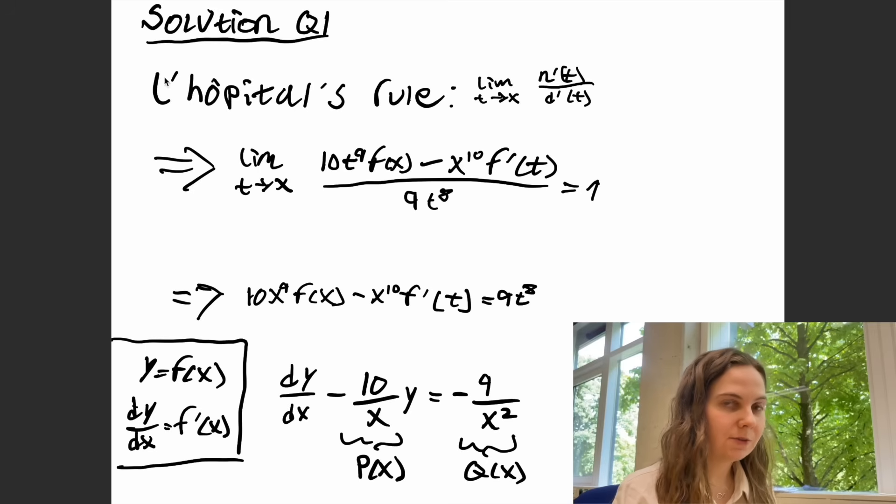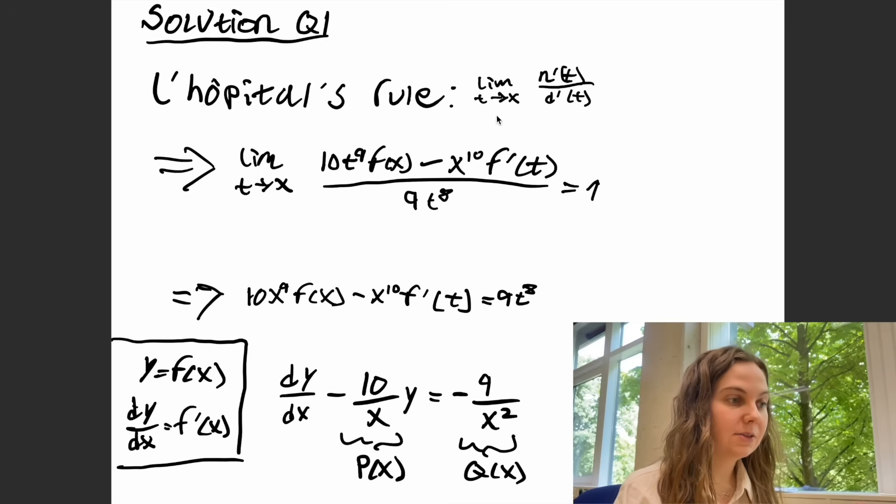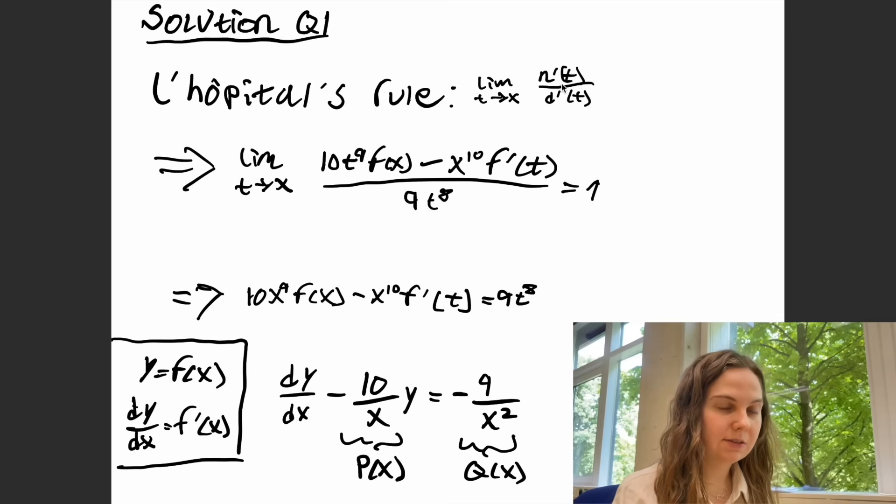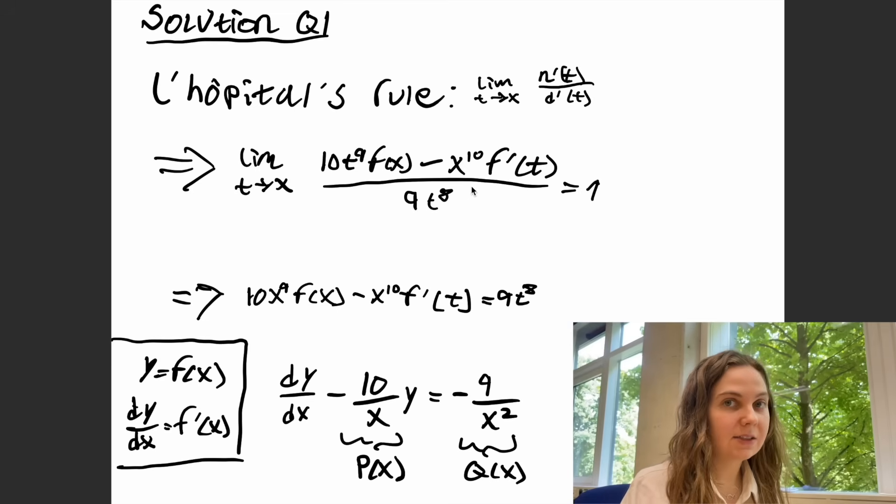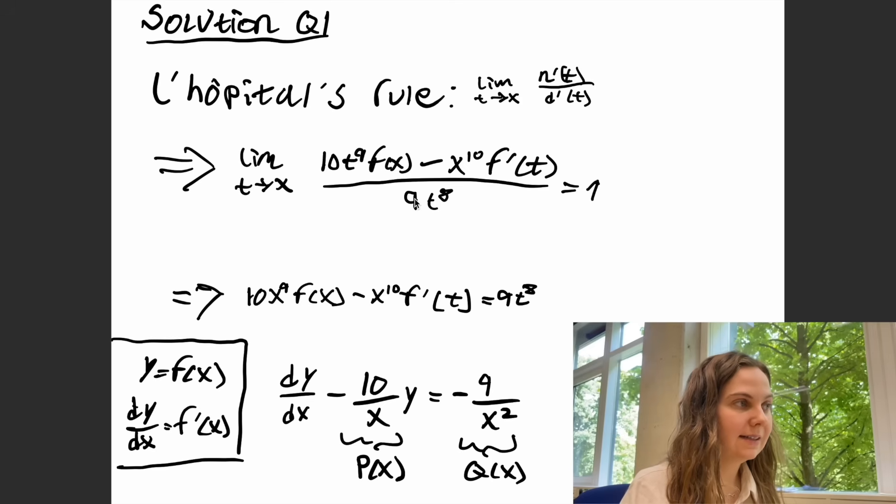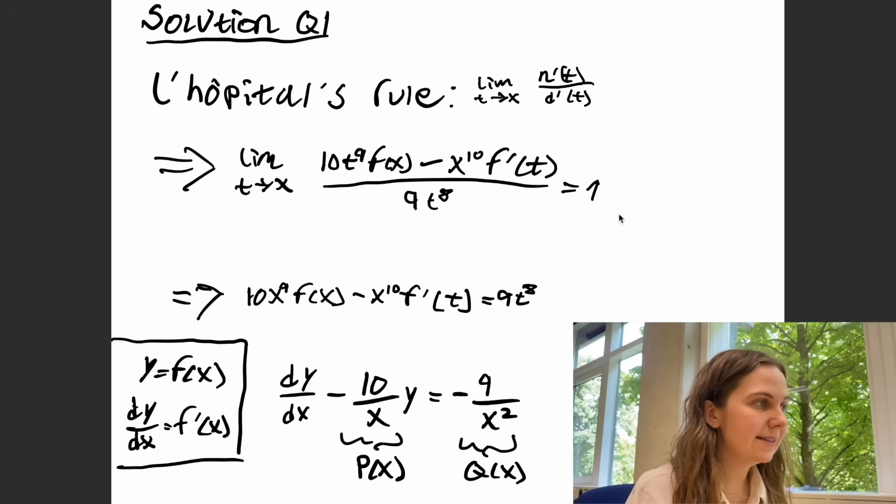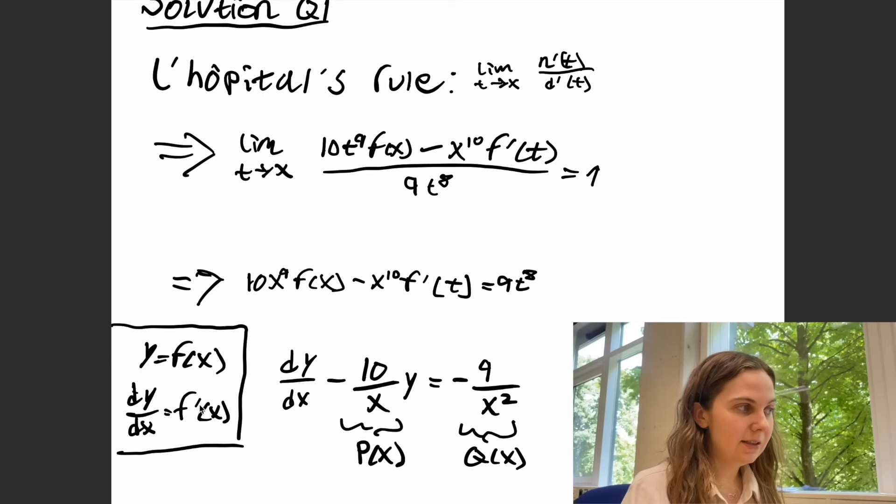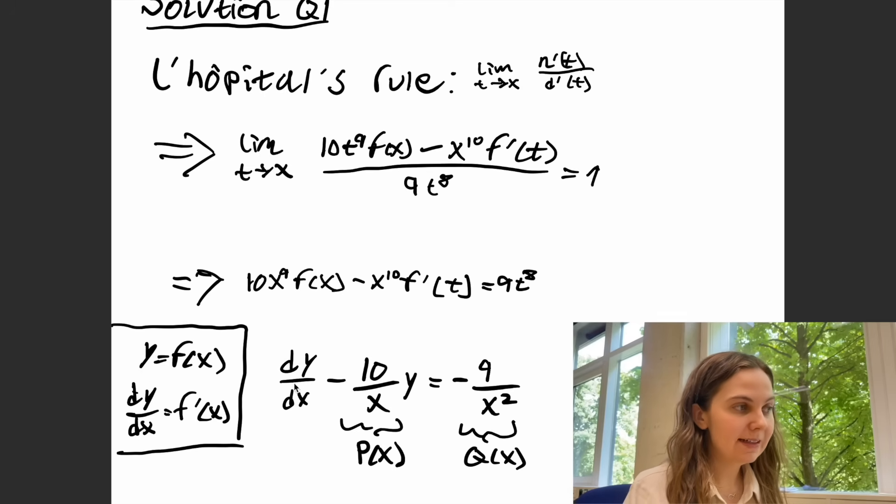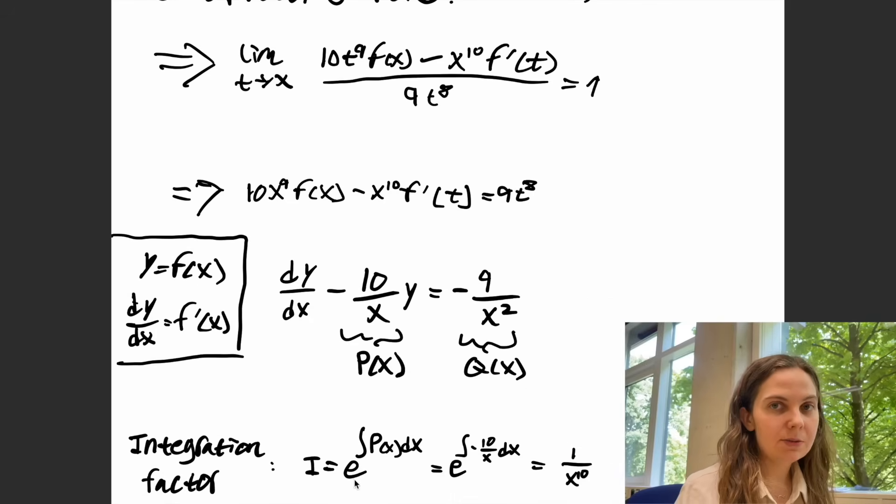So the trick that I'm sure a lot of you are familiar with is L'Hôpital's rule that basically you take the limit of the derivative of the numerator over the derivative of the denominator which in this case is just 10 times t to the power of 9 f(x) minus x to the power of 10 f'(t) over 9t to the power of 8 equal to 1. So we can take the limit of this new expression and rearrange some terms and then I also want to define f(x) as being equal to y and f'(x) as being dy/dx and we get the expression dy/dx minus 10 over x times y is equal to minus 9x squared and this kind of equation is well known and to solve this differential equation you can use a well-known trick which is the integrating factor.